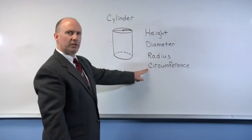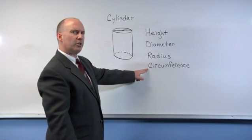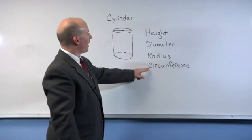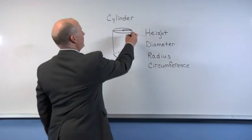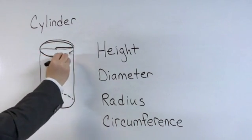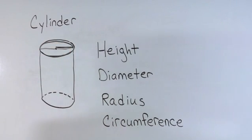The circumference is also a term that is used frequently with cylinders, and the circumference distance is the distance around the top of a cylinder.